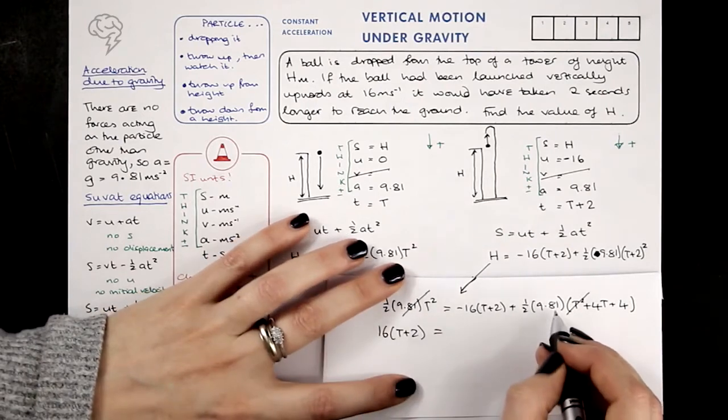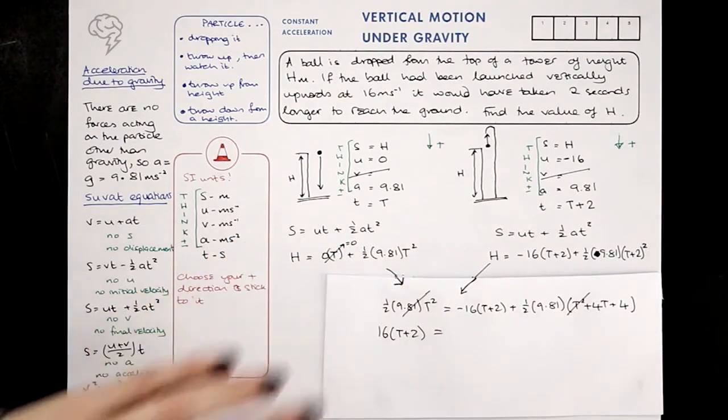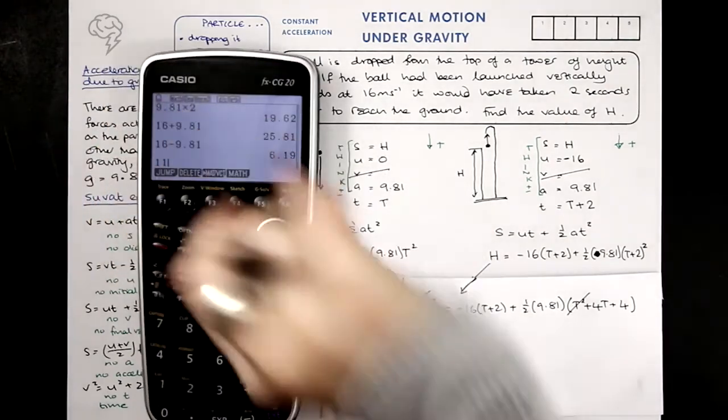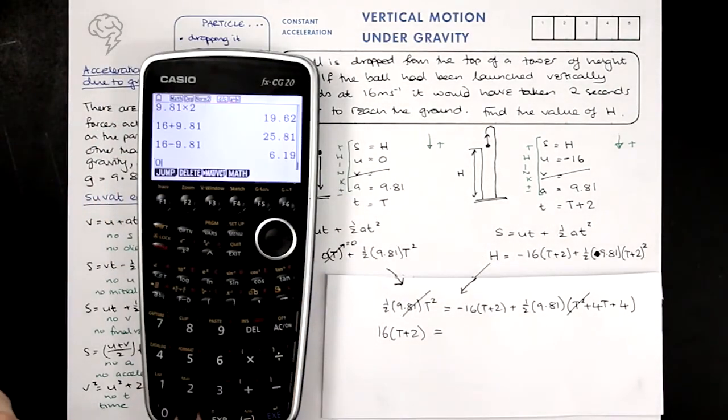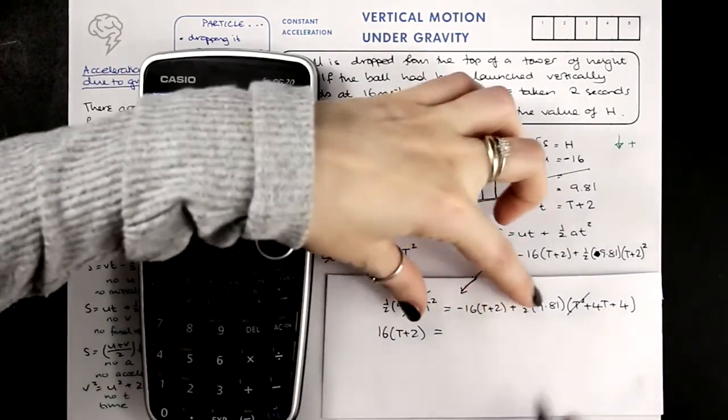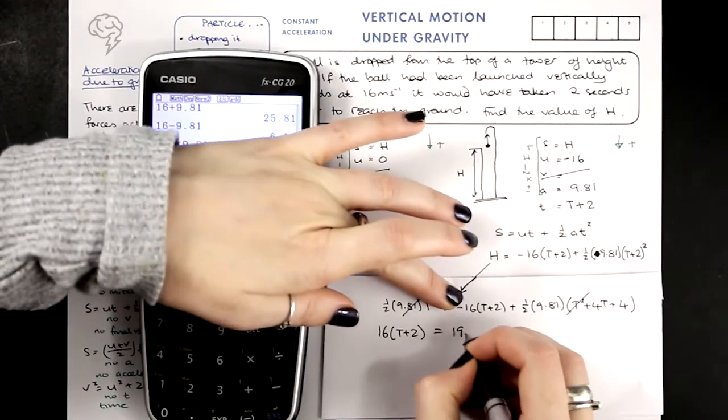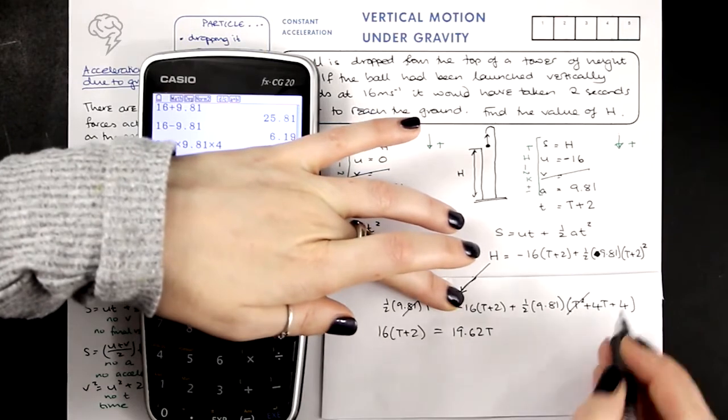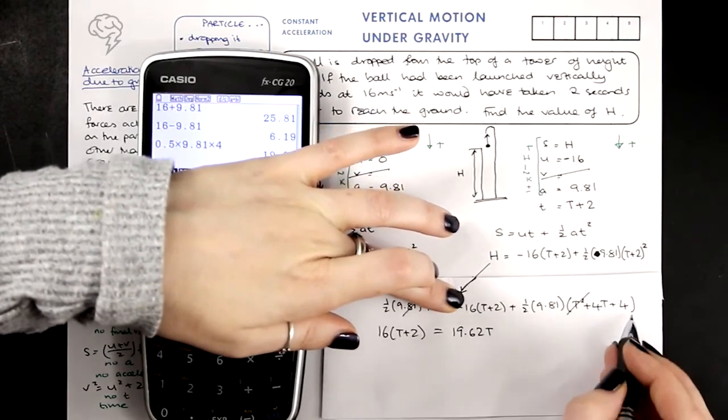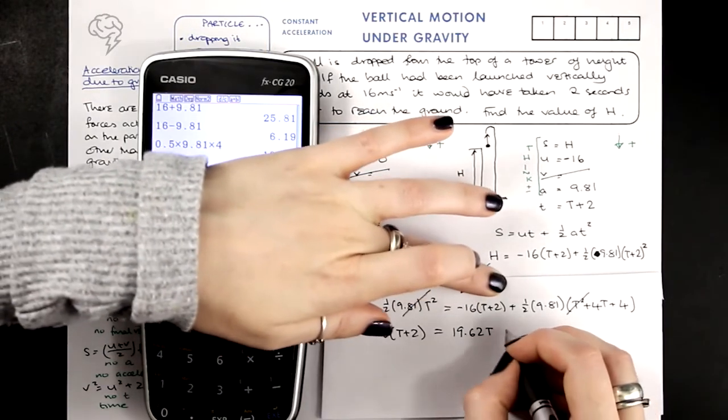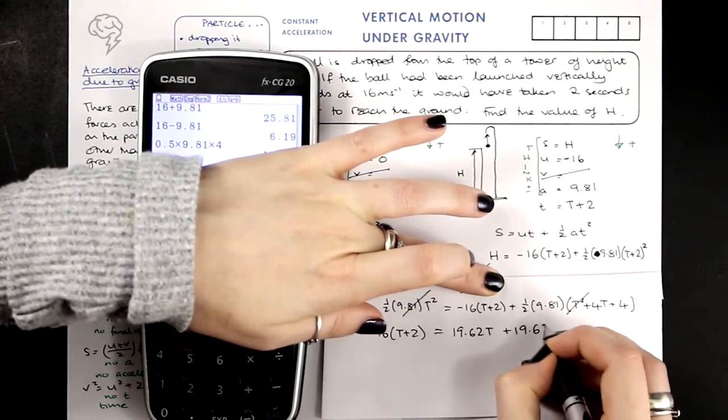And then we get a half times 9.81 times 4 T. So altogether, that is going to be 0.5 times 9.81 times 4, 19.62. So I'm going to get 19.62 T, and then I'm also going to have 4 lots of this, which is 19.62.